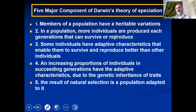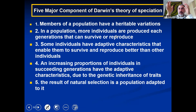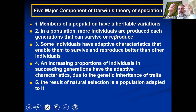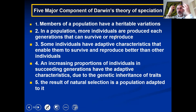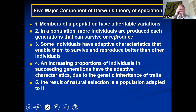Members of a population have heritable variation. Darwin did not know about the Mendel's laws of genetics, which is amazing. Mendel proposed his ideas in the mid-1850s, and Darwin proposed his idea of natural selection also in the 1850s. Scientists did not put them together until the early 1900s — combining what Mendel proposed and what Darwin proposed — resulting in the synthetic theory of evolution.